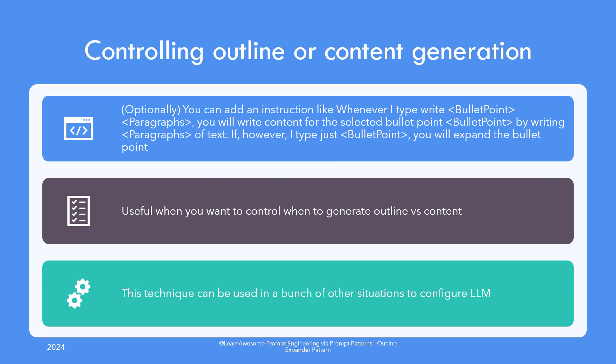You can add a further instruction to generate content for any bullet point easily — for example: 'Whenever I type [bullet point] [paragraphs], you will write content for the selected bullet point by writing that number of paragraphs of text. If I just type [bullet point], you will expand the bullet point.' The bullet point placeholder refers to a number like 3.1.2, while 'paragraphs' is the count of paragraphs to generate. You can add further instructions to configure the model as per your desire.